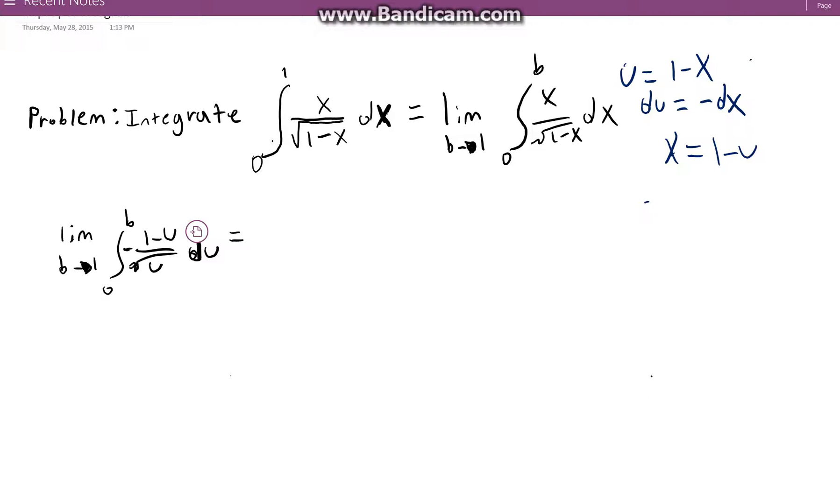So the first thing that I'm going to do is separate these into two different fractions. The limit as b approaches 1 from 0 to b. And it's important to denote your endpoints with x once you've substituted so that you can remember to convert back to a consistent system. So let's spread these. 1 over the square root of u minus u over the square root of u du.